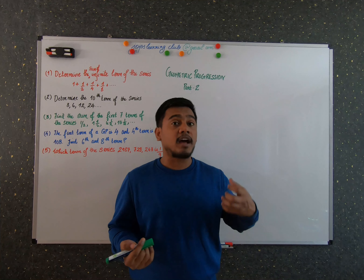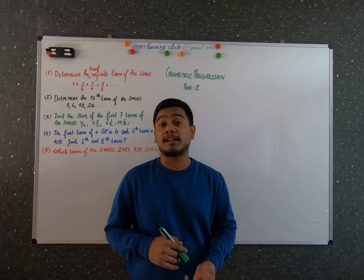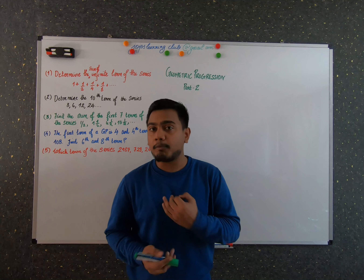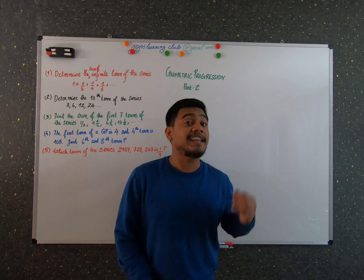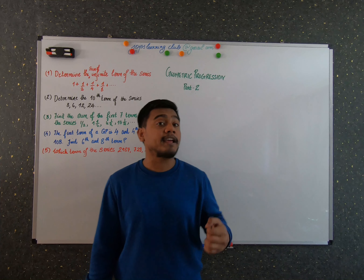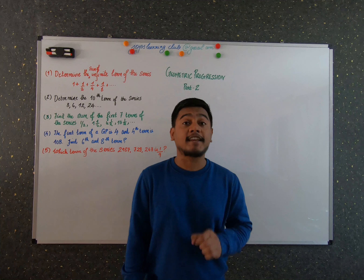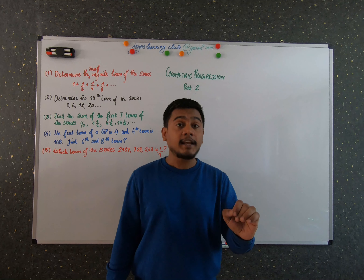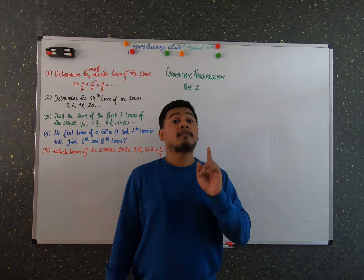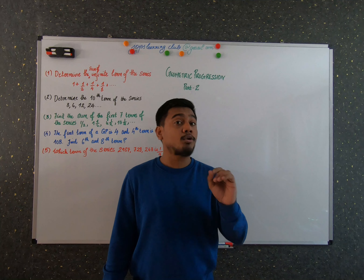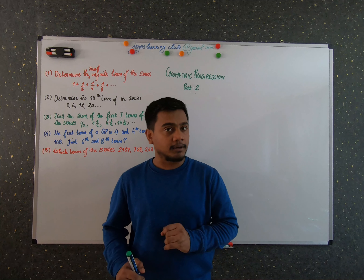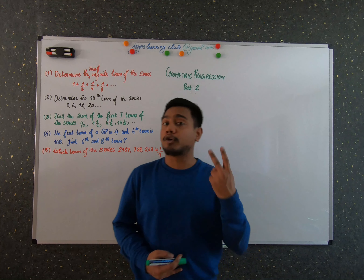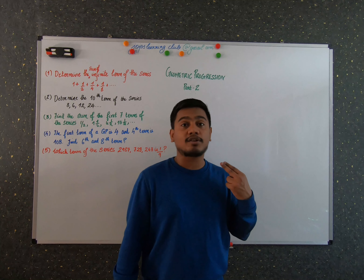A geometric progression is a number sequence where the successive terms have the same common ratio. To find the nth term of a GP, the formula is: a_n = a × r^(n−1), where a is the first term, r is the common ratio, and n is the term number. To find the sum of n terms of a GP, there are two formulas.